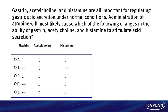So for this question, it says: gastrin, acetylcholine, and histamine are all important for regulating gastric acid secretion under normal conditions. Hopefully that wasn't anything new — you guys should all know that. That's Physiology 101.